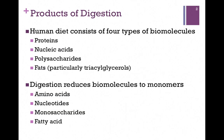In digestion, we break up those larger molecules to the monomeric form: amino acids, nucleotides, monosaccharides, and fatty acids.